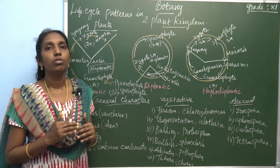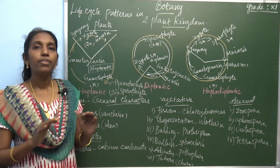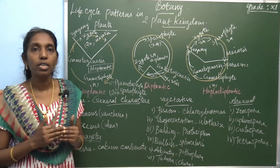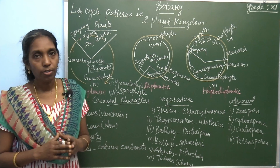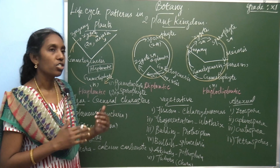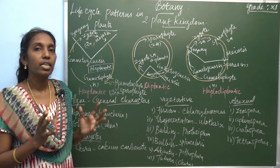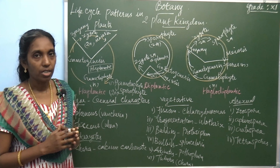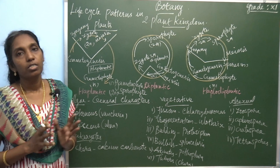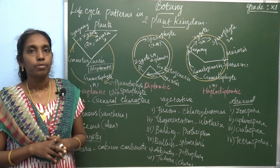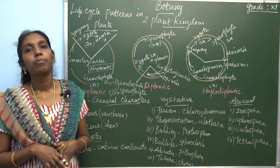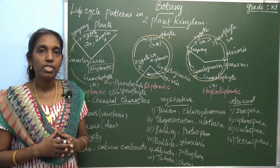Now let's move to the Plant Kingdom. There are different types of plants around us, and in this chapter you are going to learn all the different kinds. Let's start with Algae. The general characteristic features of Algae include a wide range of Thallus organization — Fresh water as well as marine water Algae are available. The Thallus is organized into several types.